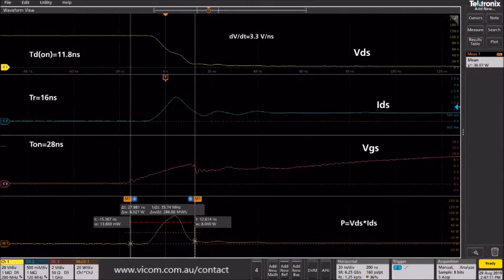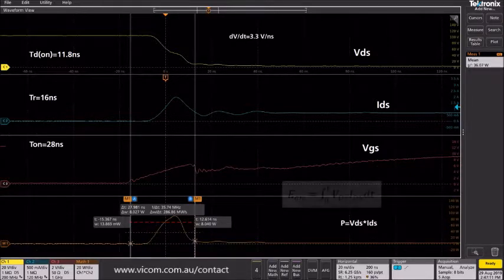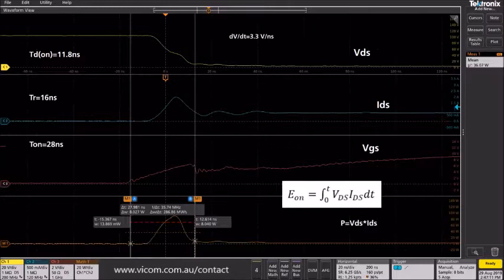Cursors on the scope can be used to retrieve the timing parameters. The energy loss for turn on time can be calculated using this equation and the integral function on the scope.